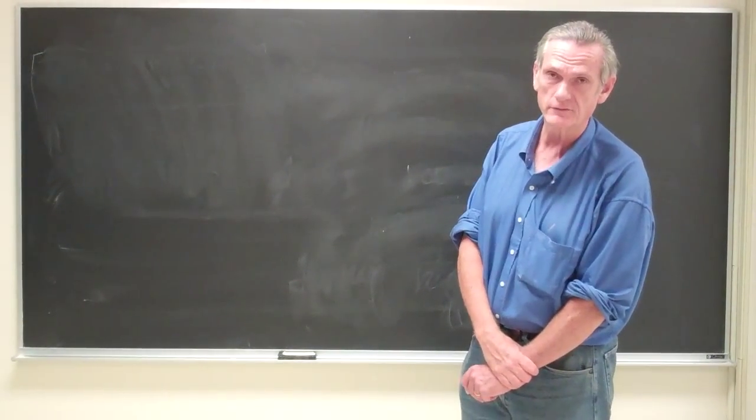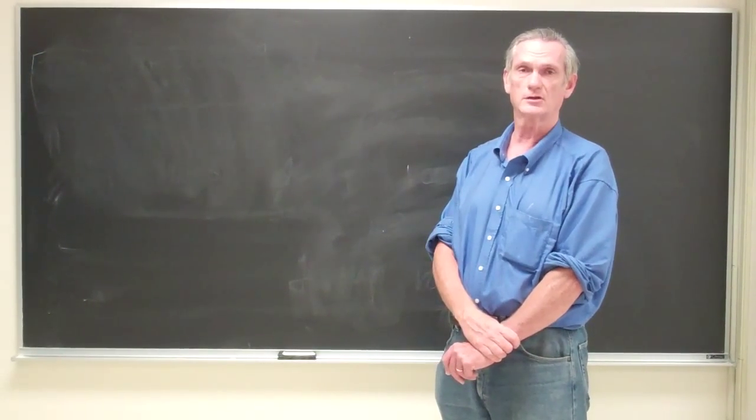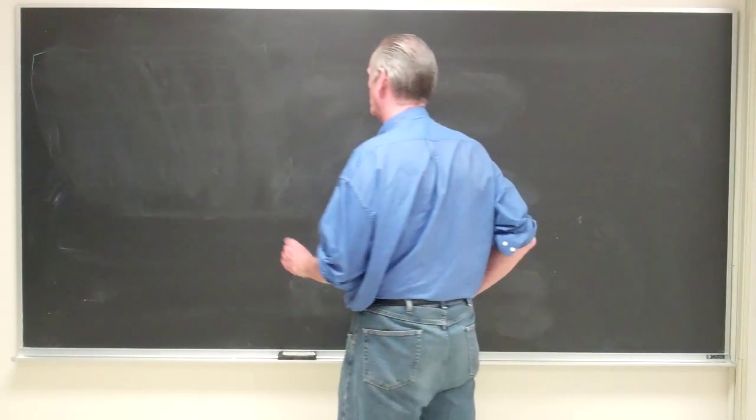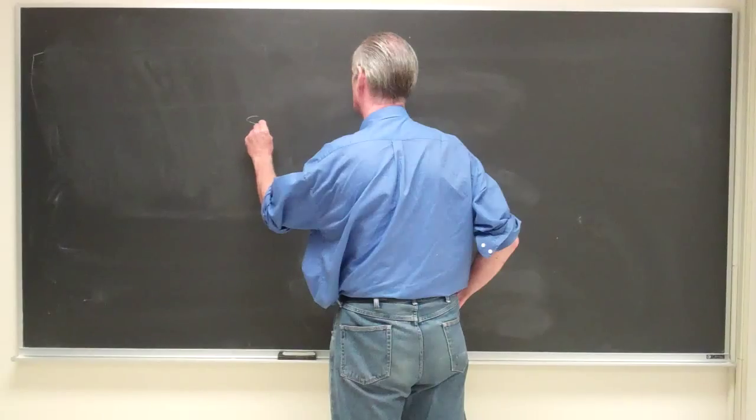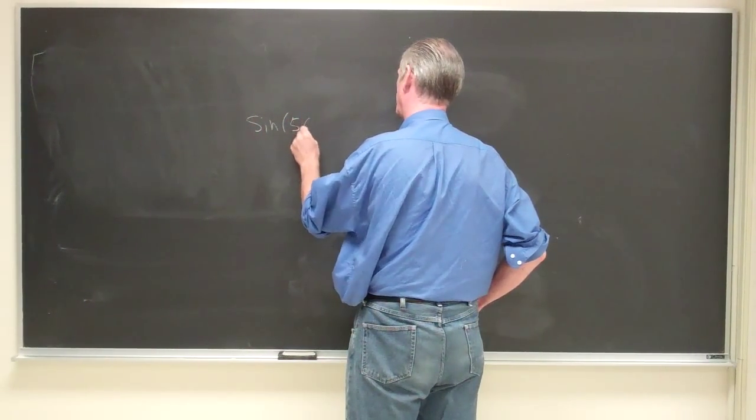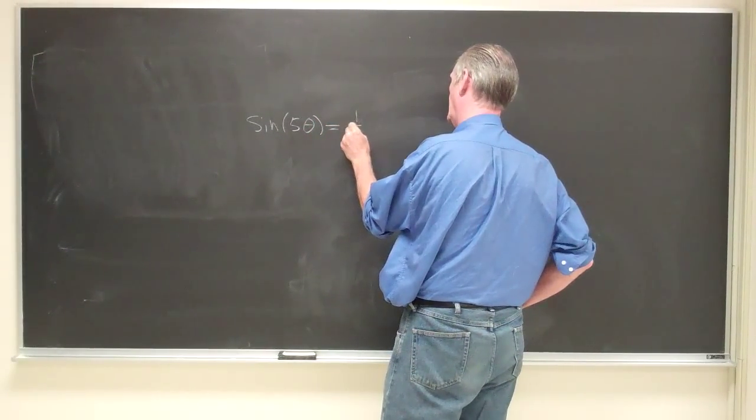Okay, so today we're going to look at solving some trigonometric equations, and I'm going to look at some of the simplest equations that I can. So, for example, let's suppose that we want to find out when sine of 5 theta is equal to 1 half.